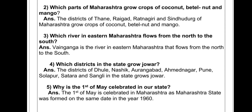Question number 2: Which parts of Maharashtra grow crops of coconut, bettelnut and mango? Answer: the districts of Thane, Raigad, Ratnagiri and Sindhudurg of Maharashtra grow crops of coconut, bettelnut and mango. Third question — which river in eastern Maharashtra flows from the north to the south? Answer: Vain Ganga is the river in eastern Maharashtra that flows from the north to the south.